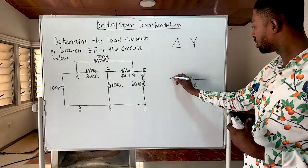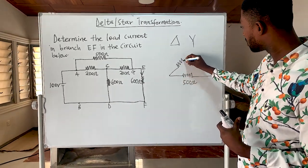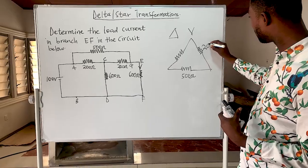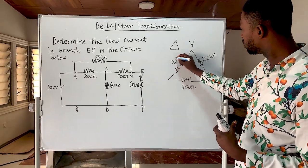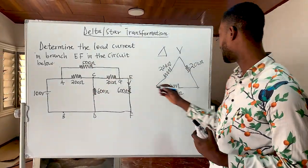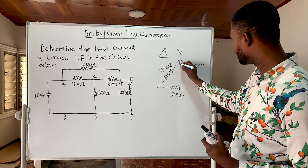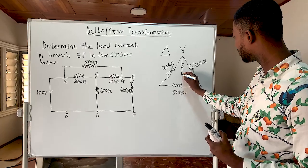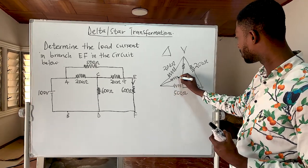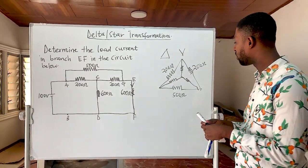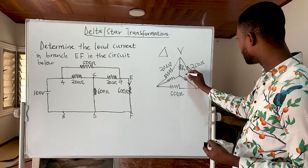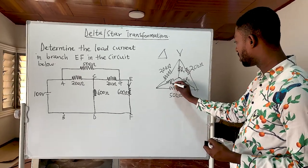We have the delta with values 500 ohms, 200 ohms, and 200 ohms. What we need to do is convert this delta to a star. We can place a star in between these elements, and then calculate for the resistors in the star connection: R1, R2, and R3.